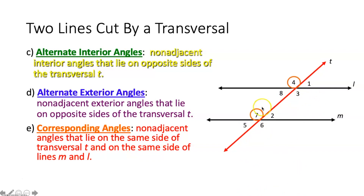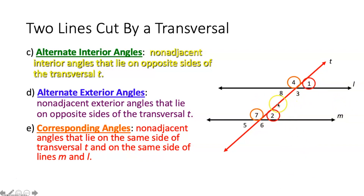Angles 7 and 4 are also corresponding angles — non-adjacent, both on the left side of transversal T, angle 7 above line M and angle 4 above line L. Same with angles 2 and 1 — non-adjacent, on the right side of the transversal, angle 2 above line M and angle 1 above line L. Therefore they are corresponding angles.